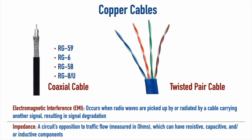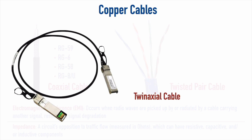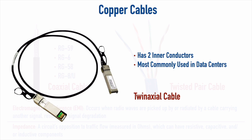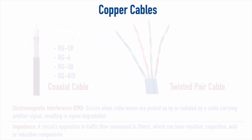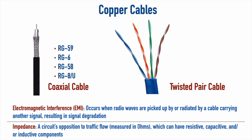A more recent variant is twin axial cable, which has two inner conductors each on their own axis. We primarily use twin axial cable in data centers because in data centers we typically don't need really long runs. If we need to interconnect components and don't need to exceed seven meters, twin axial cable might be the solution. It typically runs at either 40 gigabits per second or 100 gigabits per second with that seven-meter limitation.